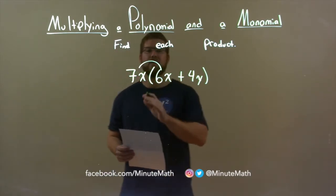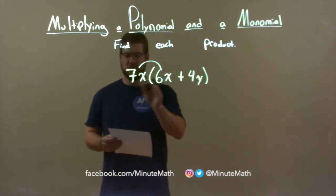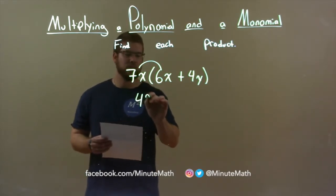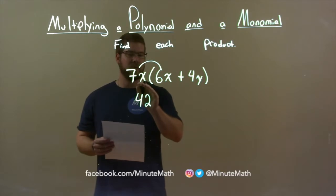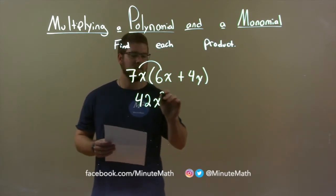The first one is 7x times 6x. 7 times 6, look at the coefficients as a 42. x times x is x squared.